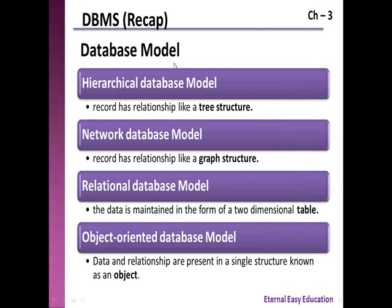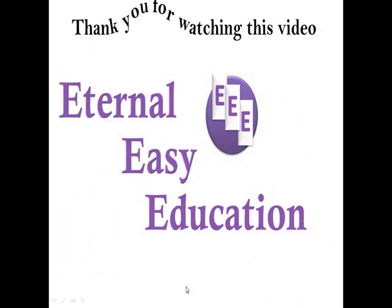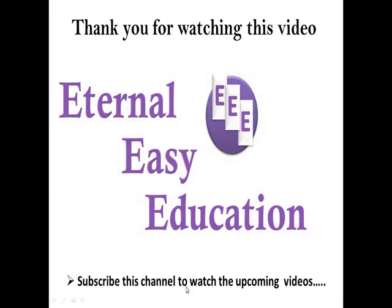Let's have a recap. Database models: Hierarchical database model — records have relationships like a tree structure. Network database model — records have relationships like a graph structure. Relational database model — data is maintained in the form of a two-dimensional table. Object-oriented database model — data and relationships are present in a single structure known as an object. Thank you for watching this video. If you like this video, subscribe to this channel to watch upcoming videos. Thank you and have a good day.